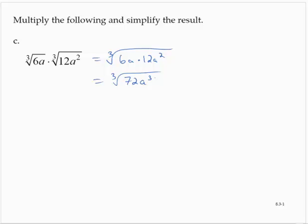Now, we have to look for perfect cube factors. Well, a to the third is a perfect cube. And let's see, 72 is 8 times 9, and 8 is a perfect cube. So I'm going to rewrite this as the cube root of 8a cube times the cube root of 9. And so that would give me 2a times the cube root of 9.